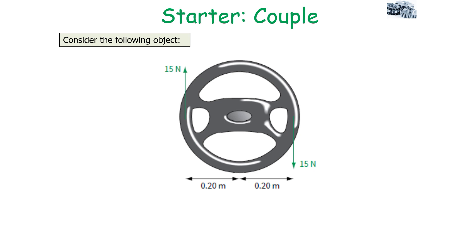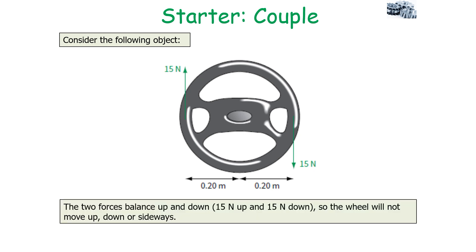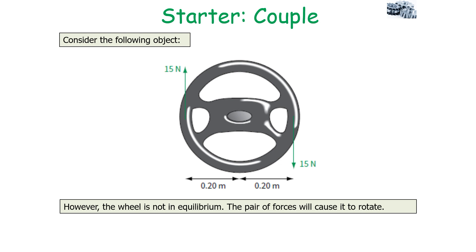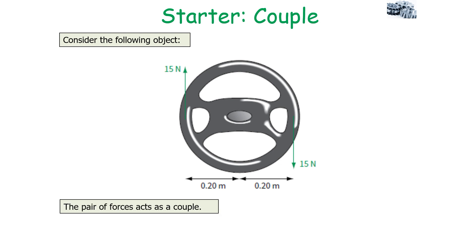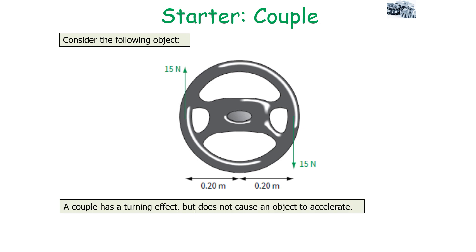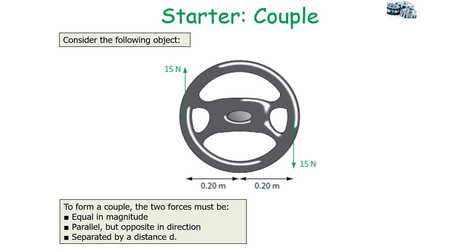Consider the object on screen: the two forces balance each other — 15 newtons acting upwards and 15 newtons acting downwards — so the wheel will not move up, down, or sideways. However, the wheel is not in equilibrium because these pairs of forces will cause it to rotate, so there is a resultant moment. We say the pair of forces acts as a couple. A couple has a turning effect but does not cause an object to accelerate by changing speed, but rather by changing direction. To form a couple, the two forces must be equal in magnitude, parallel but in opposite directions, and separated by a distance d.